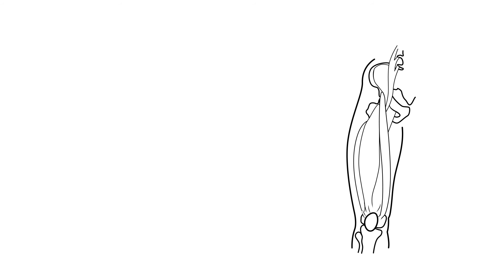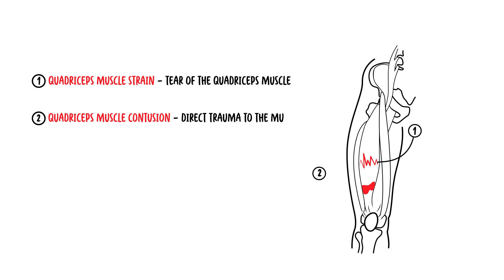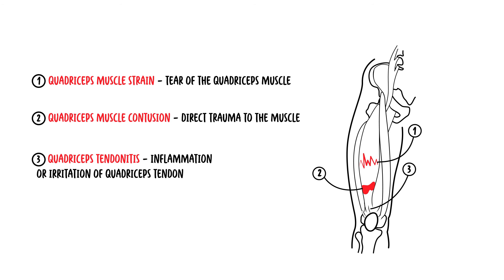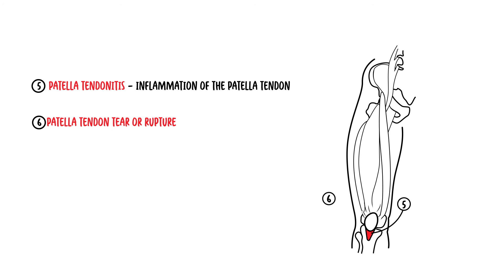There are many pathologies that can involve the quadriceps as well as the patellar tendon. This includes quadriceps muscle strain, where you have a tear of the quadriceps muscle; quadriceps muscle contusion, which is direct trauma to the muscle; quadriceps tendonitis, which is inflammation or irritation of the quadriceps tendon; quadriceps tendon tear or rupture; patella tendonitis, which is inflammation of the patellar tendon; and patellar tendon tear or rupture.